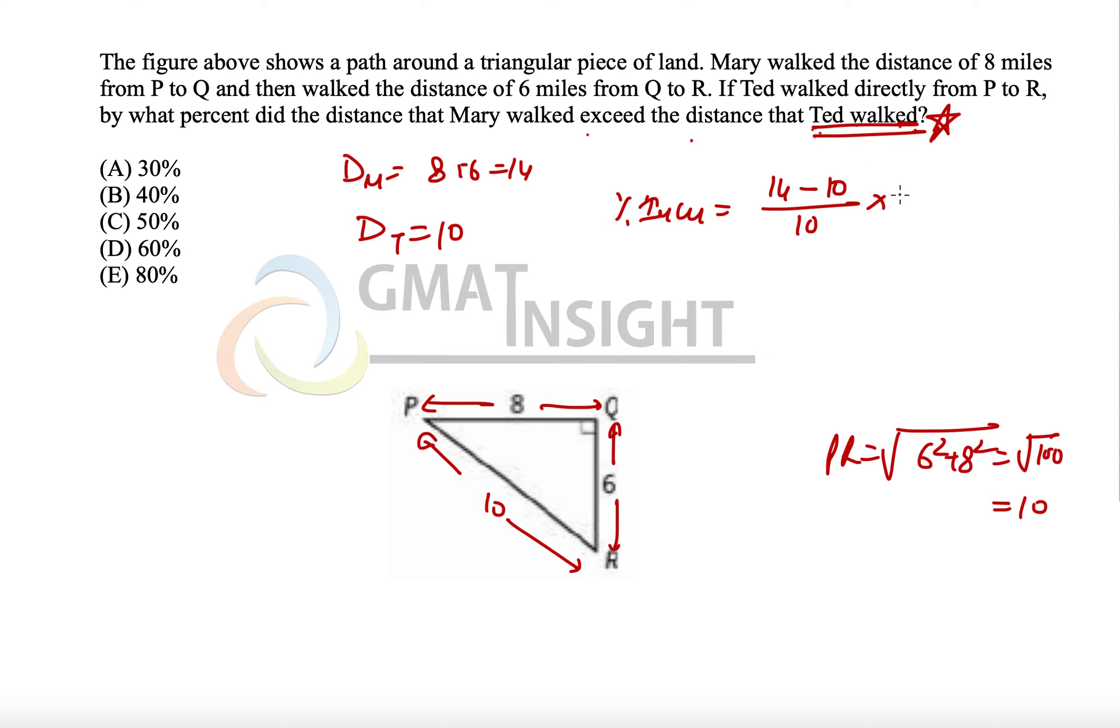So 14 minus 10 divided by 10 into 100, because the comparison is being done based on the distance walked by Ted. So Ted becomes the base. So that becomes 4 over 10 times 100. That means it is 40 percent. Mary walked 40 percent distance more than Ted walked.